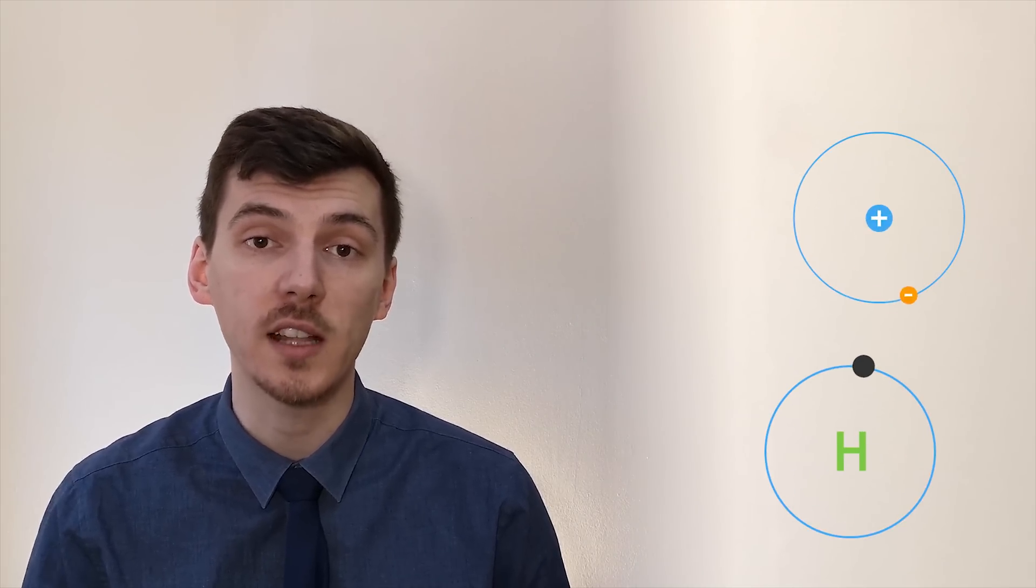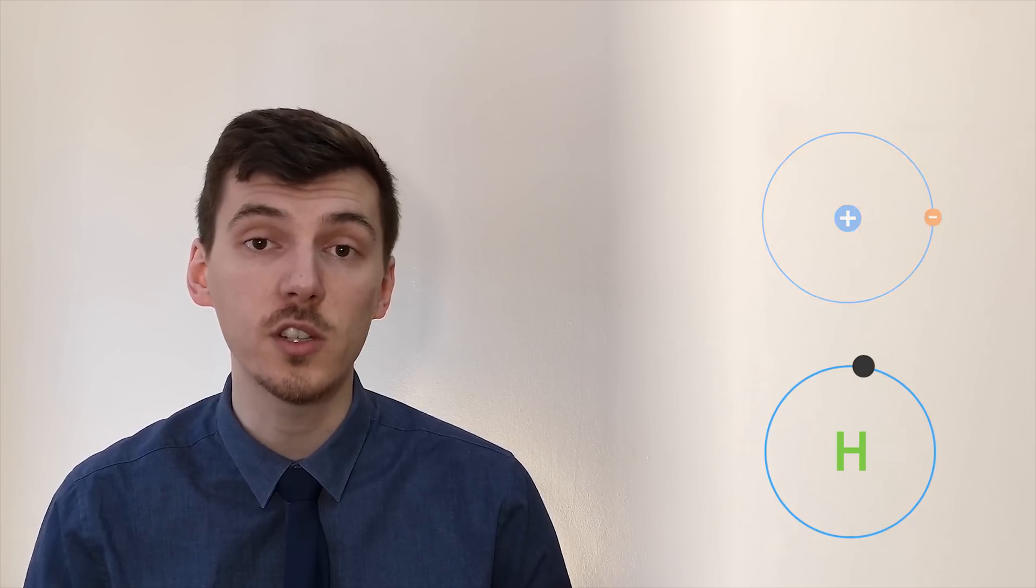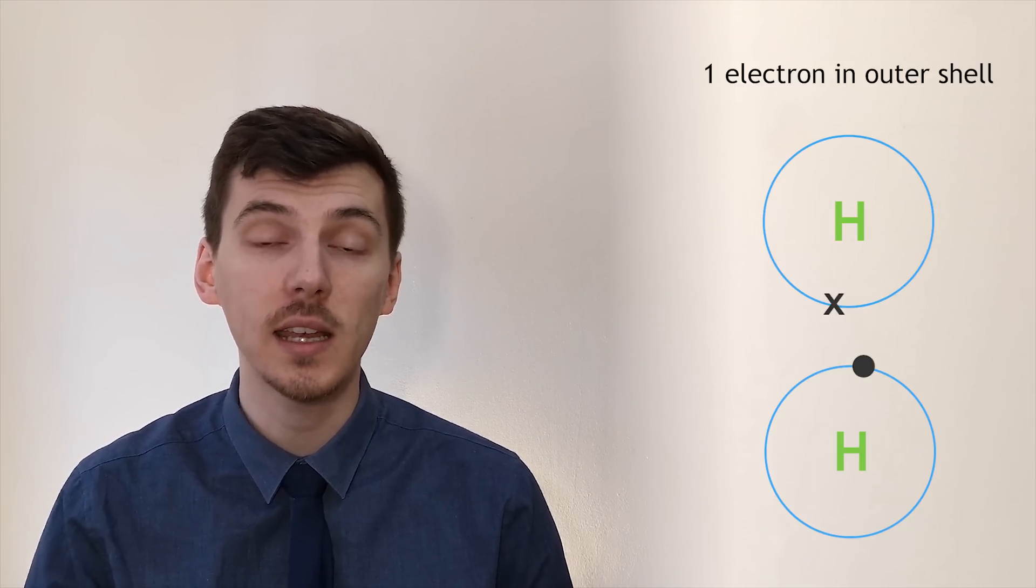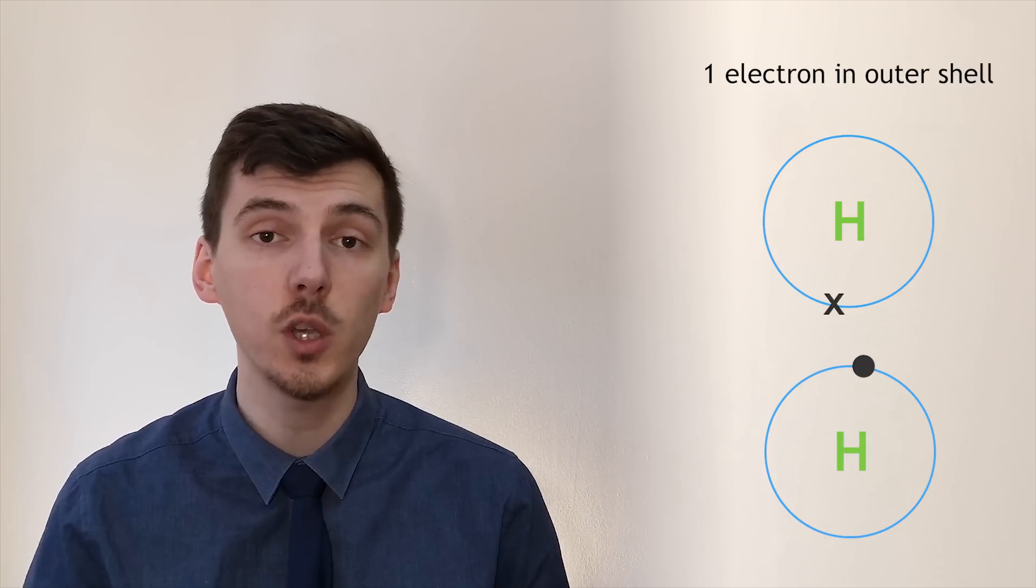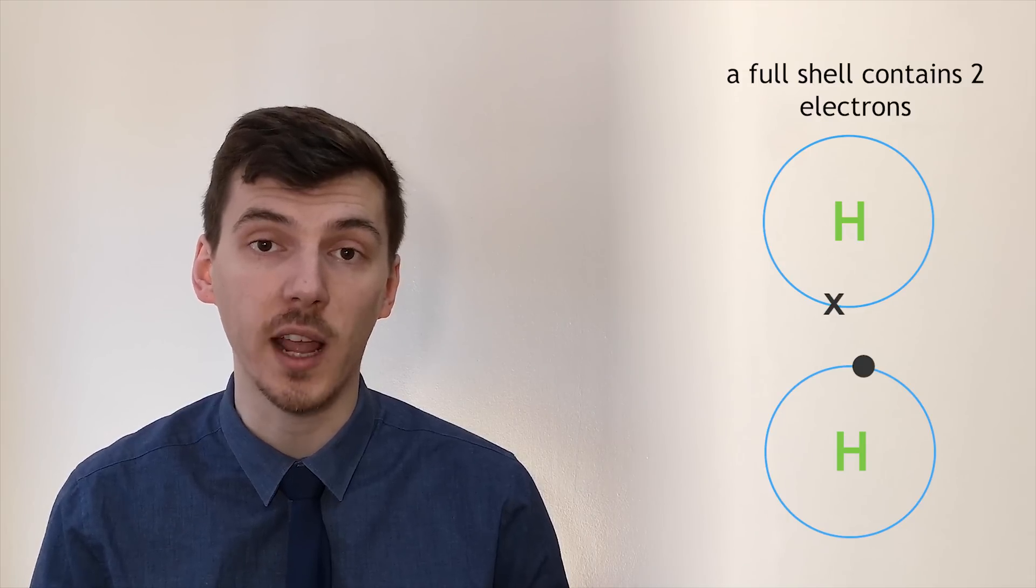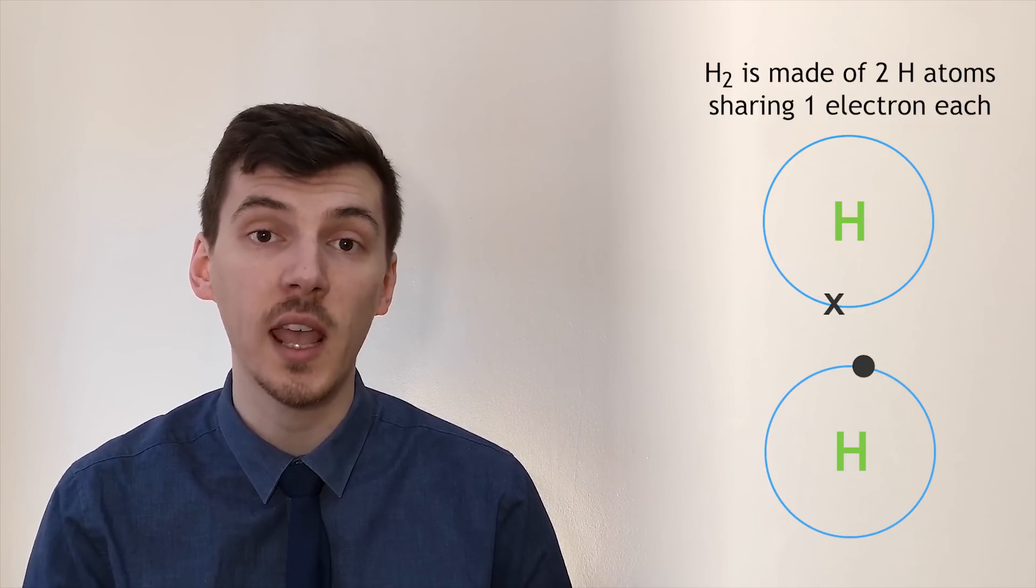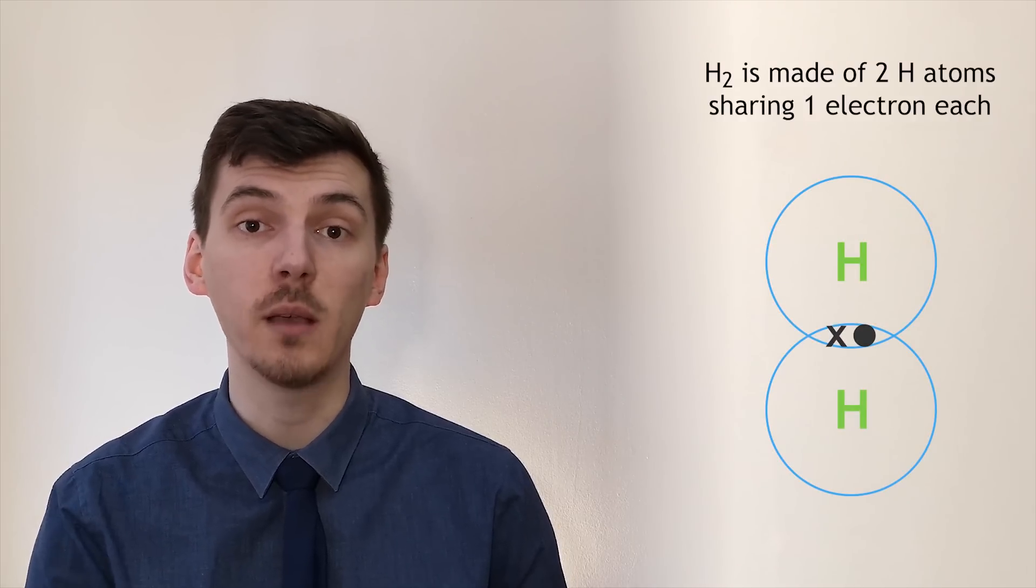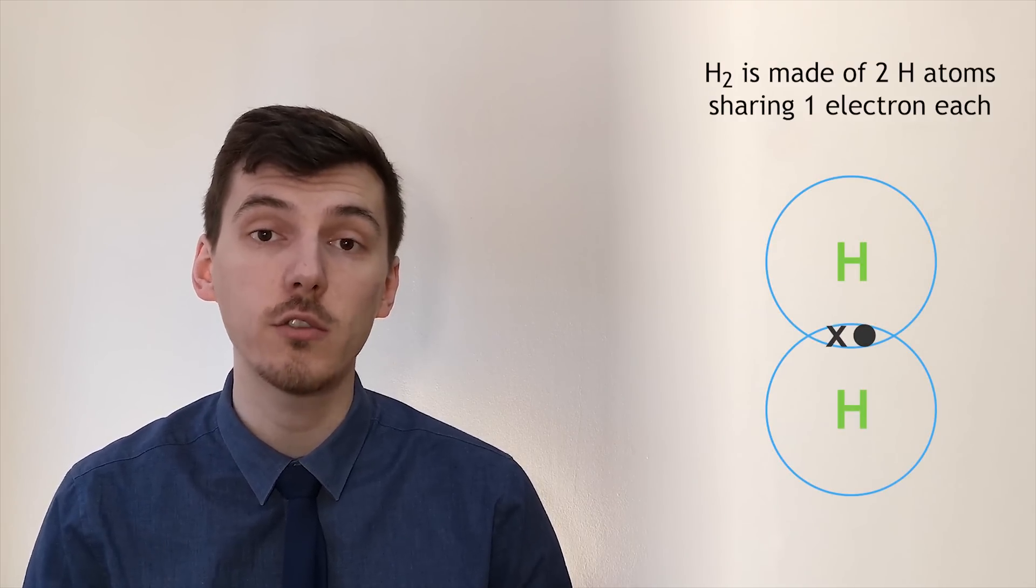The simplest covalent structure we can draw is between two hydrogen atoms to form diatomic hydrogen. We know that hydrogen has only got one electron in its outermost shell and for hydrogen it needs to have a full shell of two electrons to be stable. We can draw a diagram to show that if both hydrogen atoms share one electron in a covalent bond, we will end up with two electrons able to orbit around both hydrogen atoms.